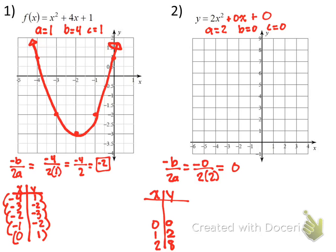Now I'll pick two numbers in the opposite direction from 0: negative 1 and negative 2, and copy the values 2 and 8 symmetrically. You see how 0 is in the middle and then it goes 2s and then 8s? Then I plot my points: 0,0; 1,2; 2,8; and the mirror points. You can see it looks like a narrower graph — a U-shape. Try to make it curvy rather than a sharp V. We just graphed number 2.